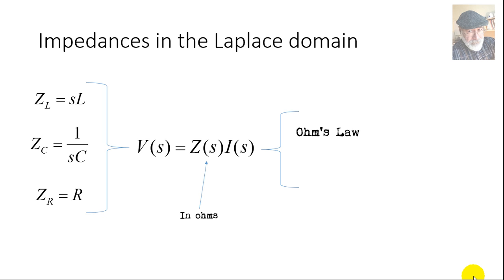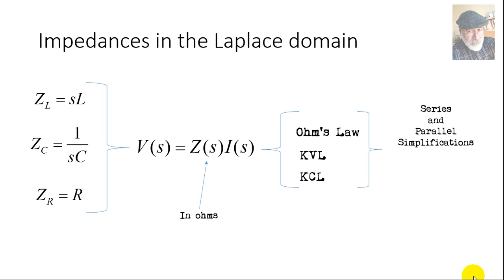Since we have Ohm's law and we keep KVL and KCL, we can use the same simplification methods: impedances in series, impedances in parallel, delta-to-Y conversions, Y-to-delta, and more. We can use MNA — modified nodal analysis — loop analysis, mesh analysis, cut-set method, branch currents method, or any method of your choice. I prefer to use MNA.